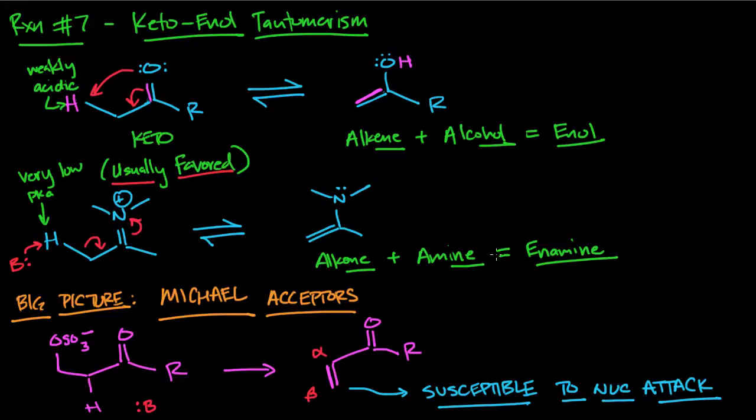Big picture: what does this all mean? The importance is that tautomers, specifically the keto form, can be a good way to generate a Michael acceptor.